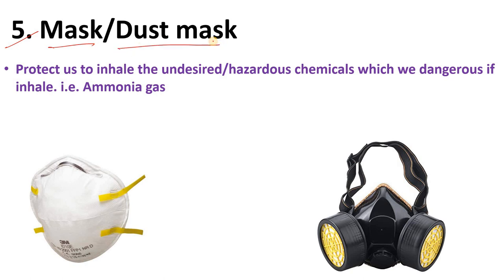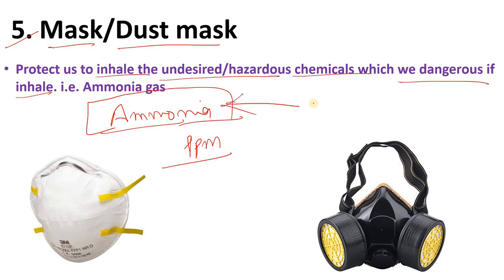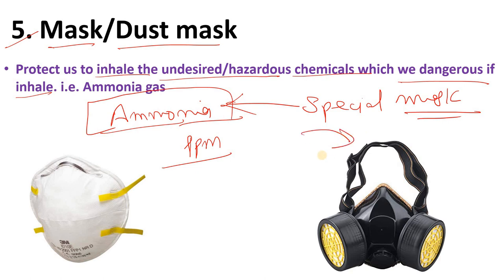The fifth PPE is a mask or dust mask. It protects us from inhaling undesired and hazardous chemicals which may be dangerous if inhaled. For example, if you inhale ammonia above a certain concentration, it may create serious injury or even lead to death. So you must wear a mask. At that time you will wear a special mask where oxygen will be provided to you. While working in a dusty area, please wear a mask, or if there is a gas leakage, you must wear a special mask.